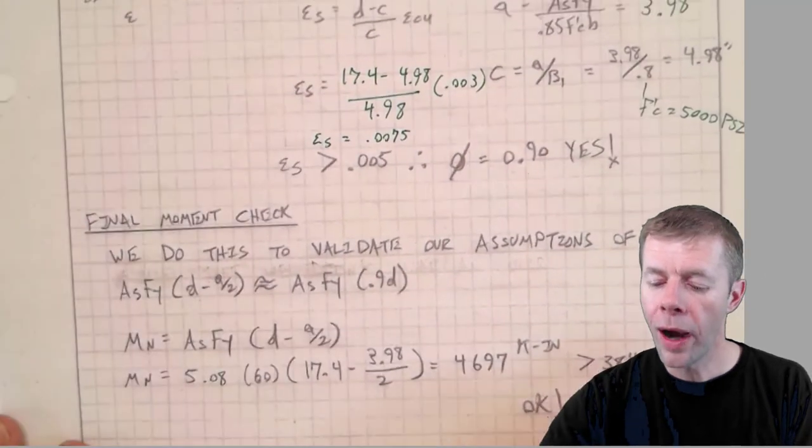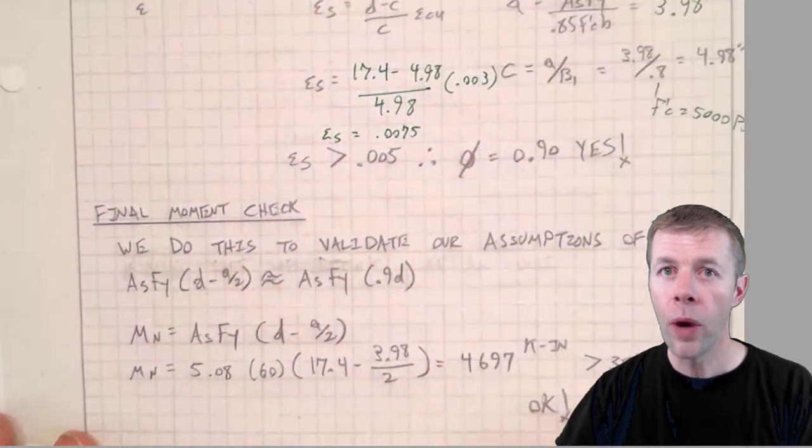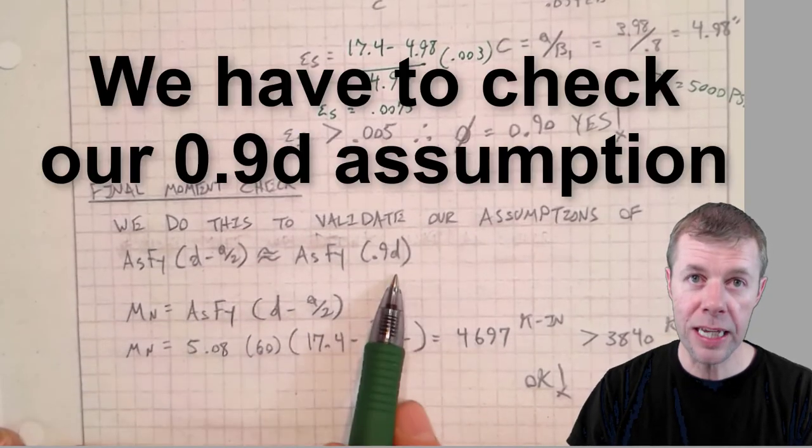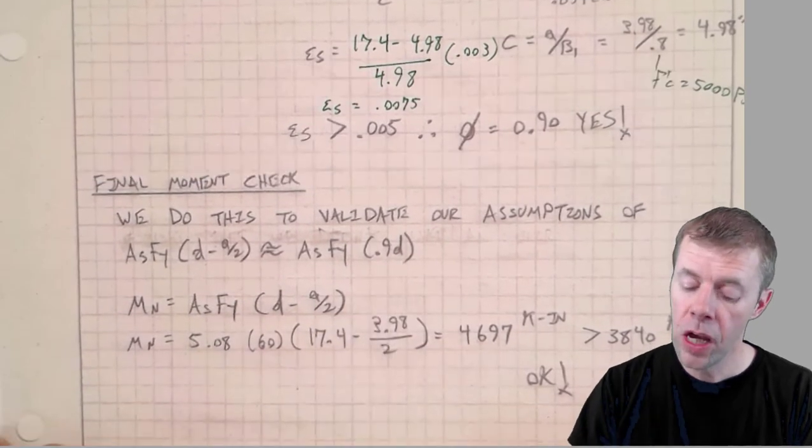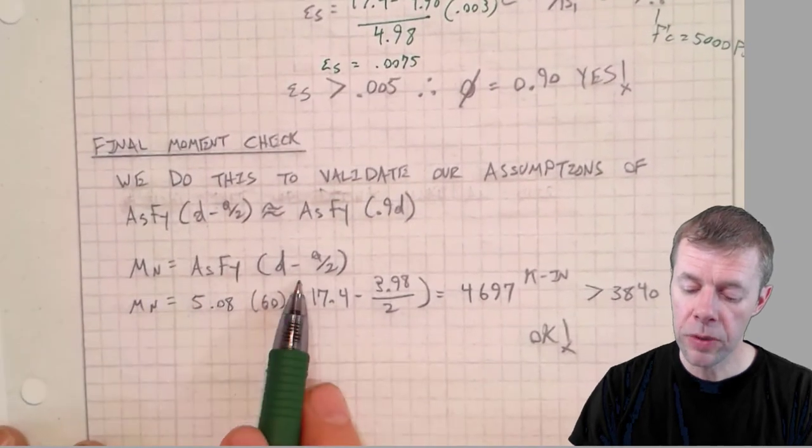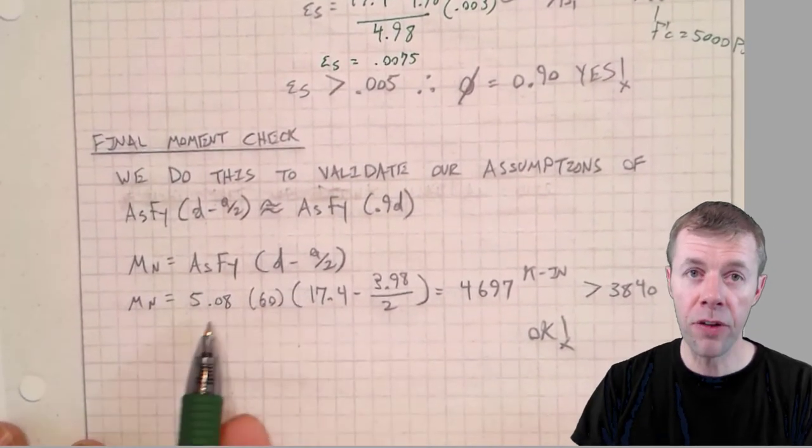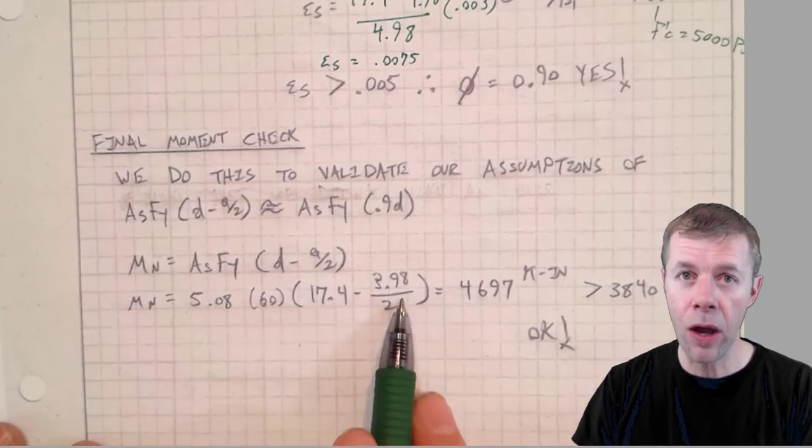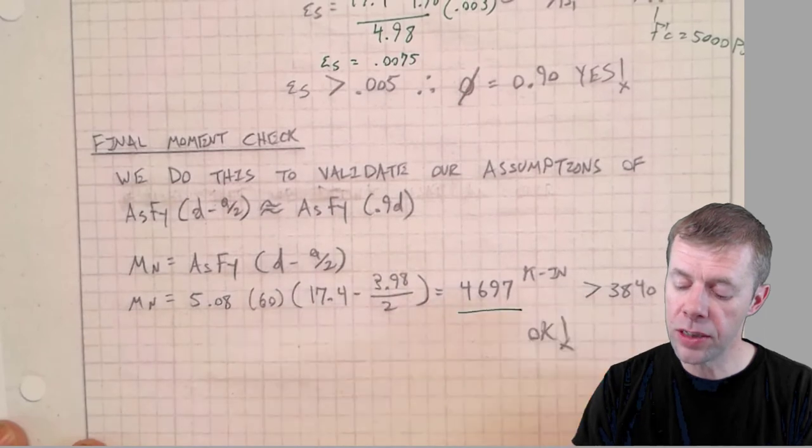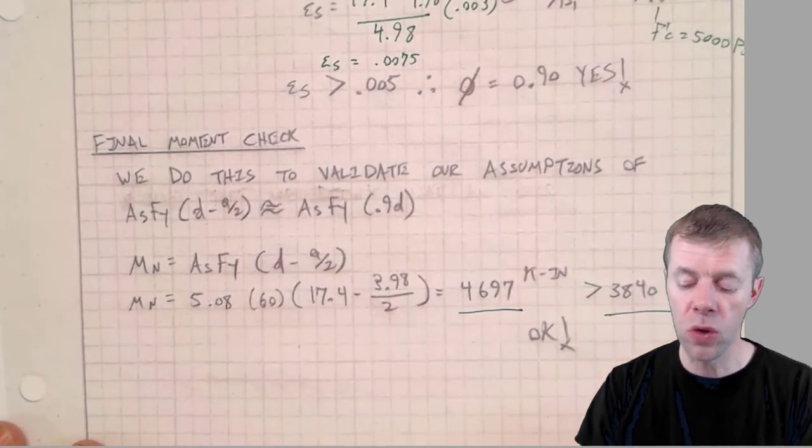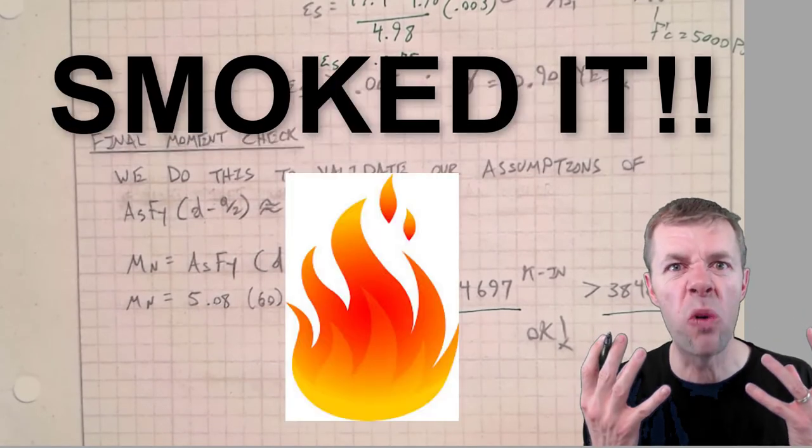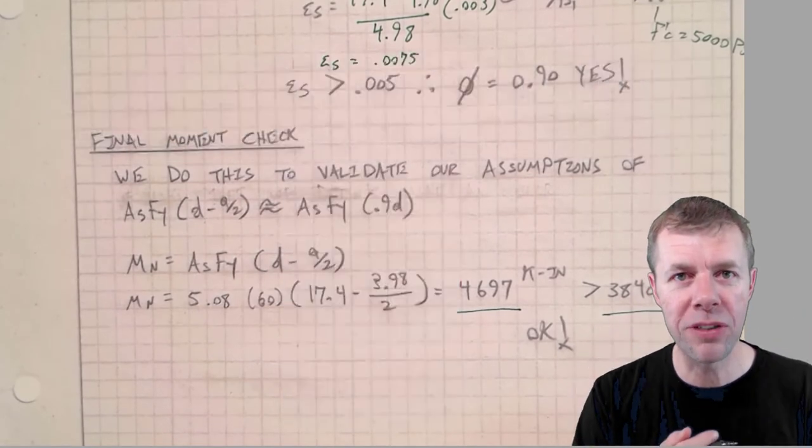We have to do a final moment check. Why? We have to validate our assumption about the 0.9D. This is the moment that I gave you, this is the moment equation we need. I start plugging in everything I know: my area, my Fy, my D, my a over 2. I calculate 4,697 which is greater than 3,840. Everything is great, everything is beautiful. I just knocked out a reinforced concrete beam design in about 10 minutes. How awesome is that?